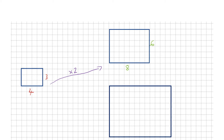But let's think about the area — what's happening inside each of these rectangles. Remember the area is the amount of space within an object. This rectangle here has area 4 times 3, so the area of this shape is 12 centimeters squared. So we would expect our new area to be 12 times 2, which is 24 centimeters squared.